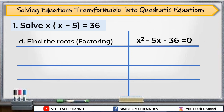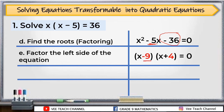So we'll find the roots using factoring. Look for the constant term, which is negative 36, and think of factors of negative 36 that when added equal negative 5. The numbers we're looking for are negative 9 and positive 4. We also factor x squared, giving us x and x. So our factors are x minus 9 and x plus 4.